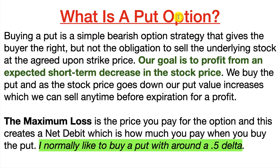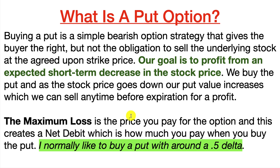So what is a put option? Buying a put is a simple bearish option strategy that gives the buyer the right but not the obligation to sell the underlying stock at an agreed upon stock price. Our goal is to profit from an expected short-term decrease in the stock price. We buy the put and as the stock price goes down our put value increases, which we can sell anytime before expiration for a profit. The maximum loss is the price you pay for the option and this creates a net debit, which is how much you pay when you buy the put.